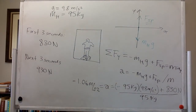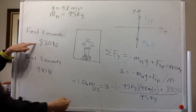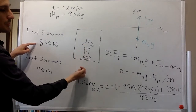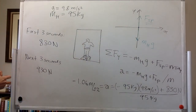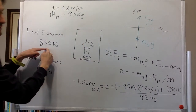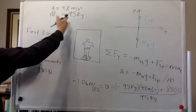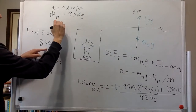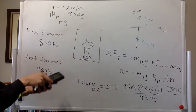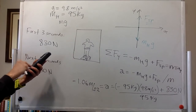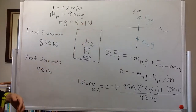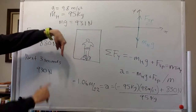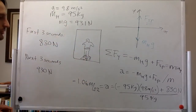So why is it negative? Because the force the bathroom scale is exerting on Henry is smaller than his weight. His weight is 95 times 9.8, which is 931 newtons. The weight is greater than the spring force, so Henry accelerates downward.